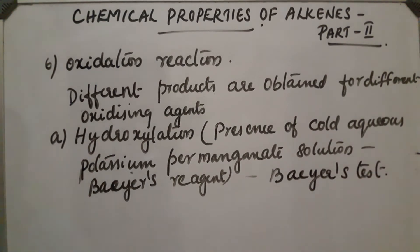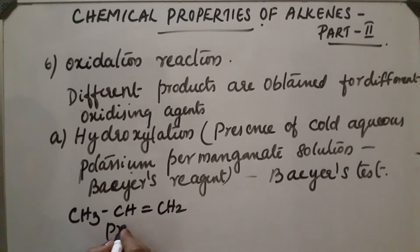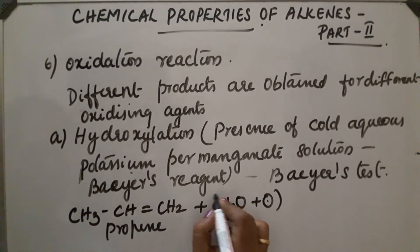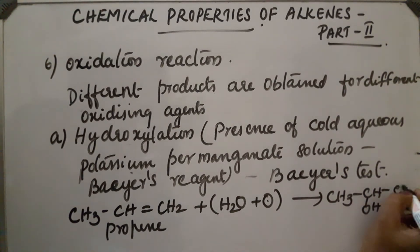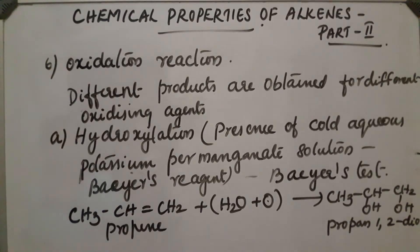Bayer's test is an identification test for the presence of unsaturation. Let us take the example of propene: CH₃–CH=CH₂. The reaction takes place in the presence of water — hydroxylation is taking place. Two OH groups are added to give CH₃–CH(OH)–CH₂OH, which is propane-1,2-diol.